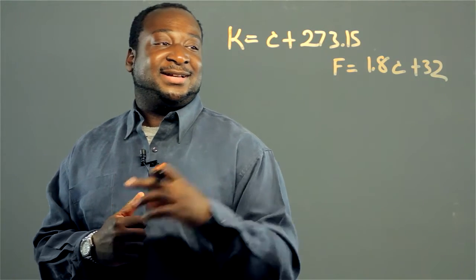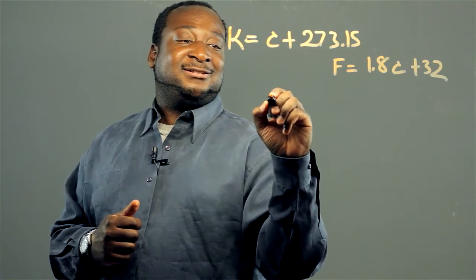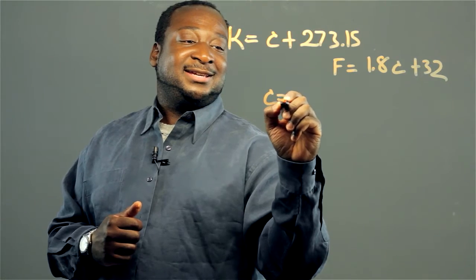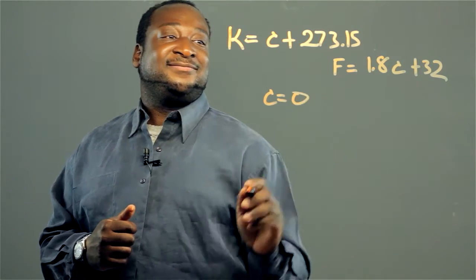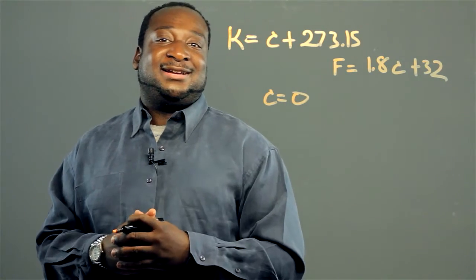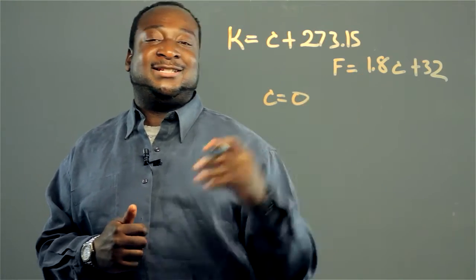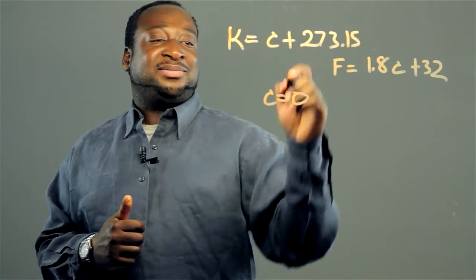If we have our degrees Celsius equal to zero, we find out what that is in Kelvin and what that is in Fahrenheit. We just plug the number in.